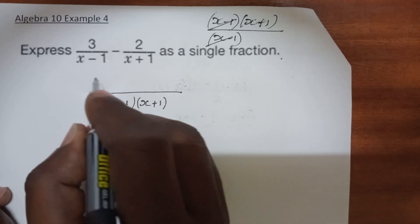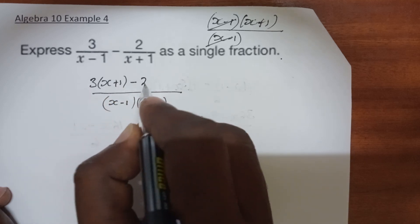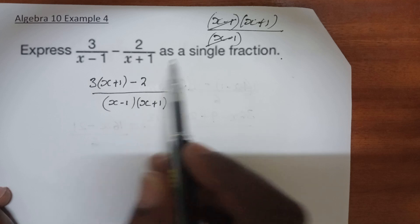Now it is the x plus 1 that we must multiply by the numerator, which is 3. So we are going to have 3(x+1) minus 2...